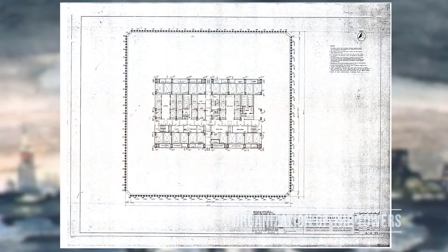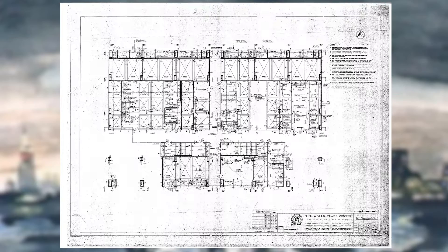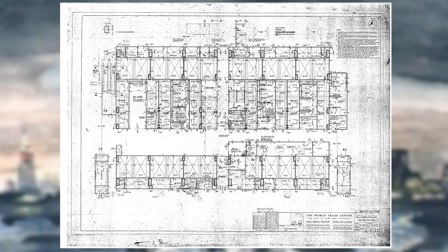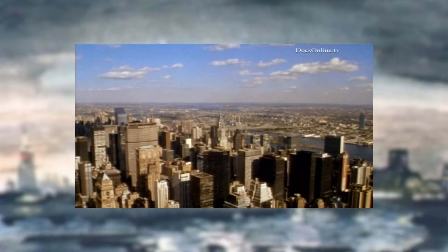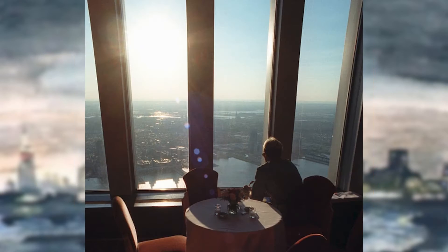The towers shared a simple plan: a 208-foot square surrounded by an 87-foot by 135-foot core that was composed of 47 steel columns. The core contained all of the building's services, including the elevators, stairs, bathrooms, and mechanical operations. A unique feature of the building's circulation was the usage of sky lobbies.